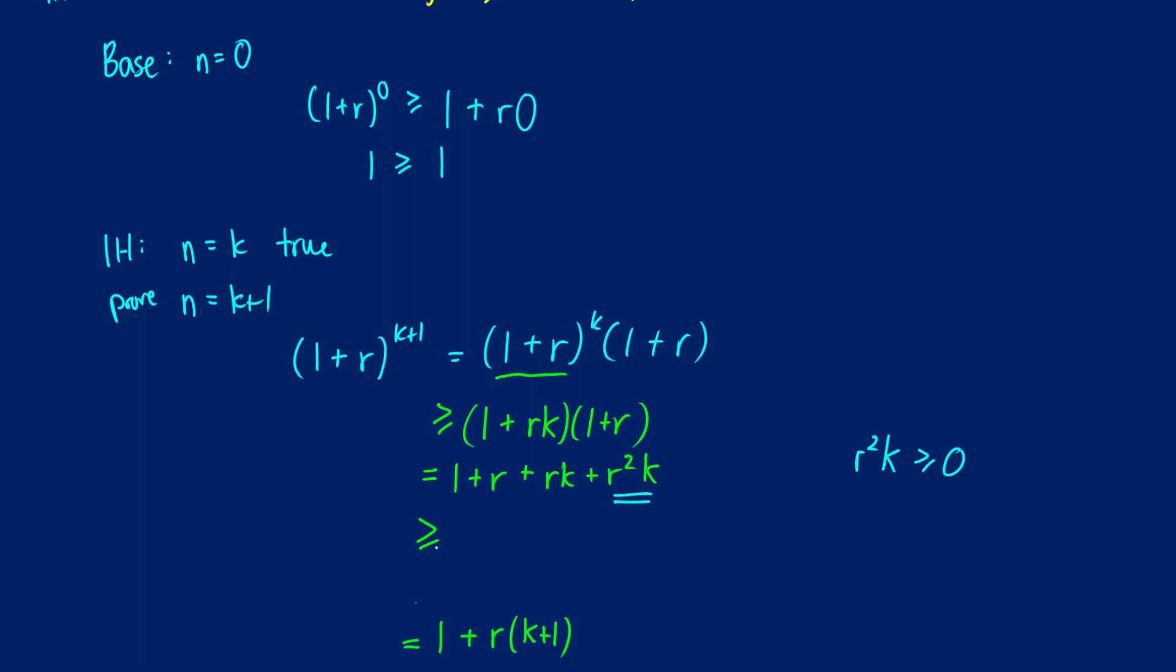So we can just remove it and say that since r squared k is greater than 0, then 1 plus r plus rk at least has to be greater with the r squared k than just itself without r squared k. Now all we have to do is do some factoring and we can get to our final step that equals 1 plus r times k plus 1.